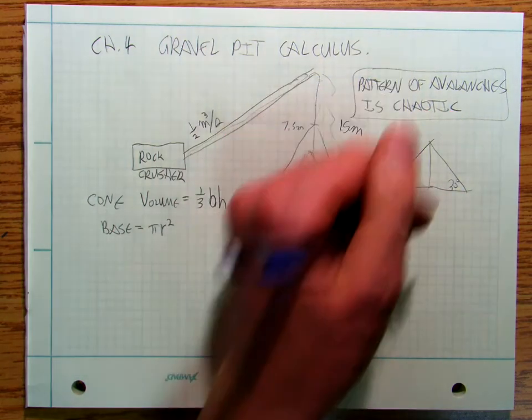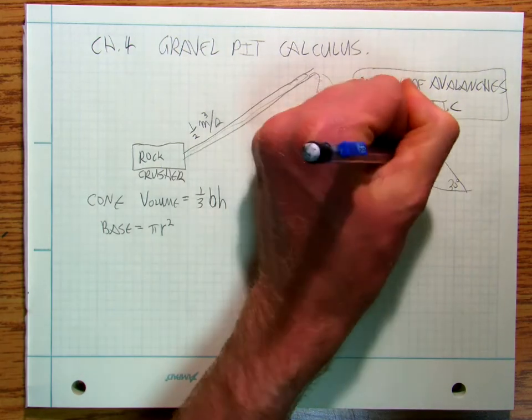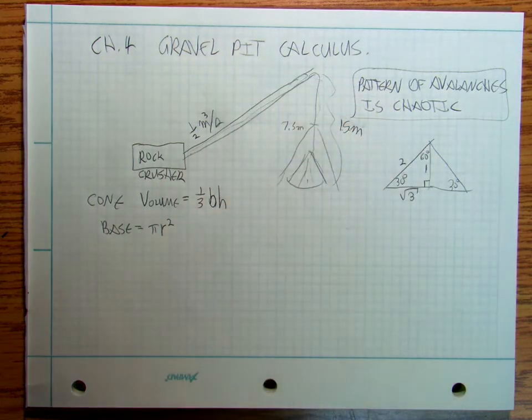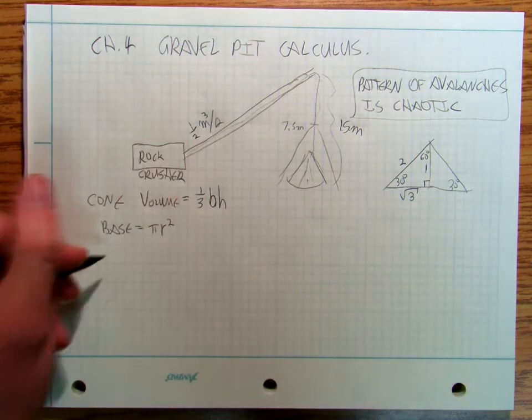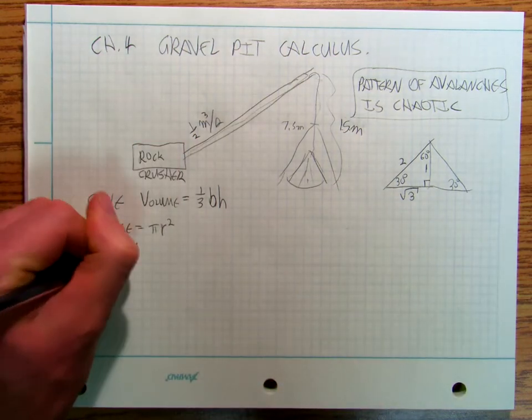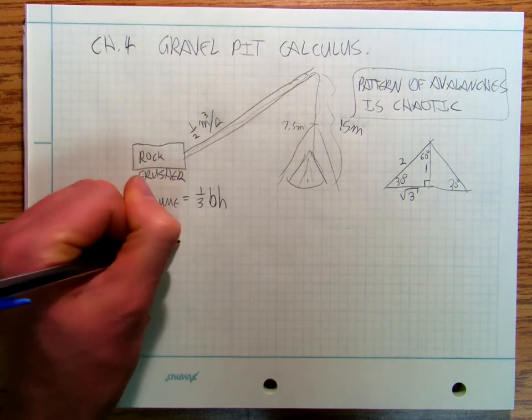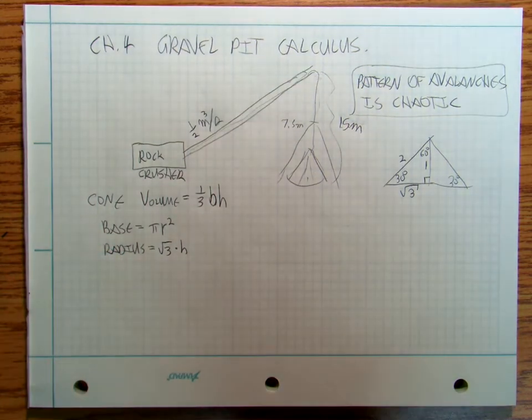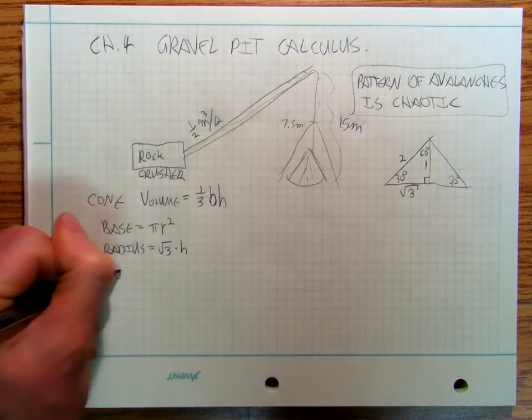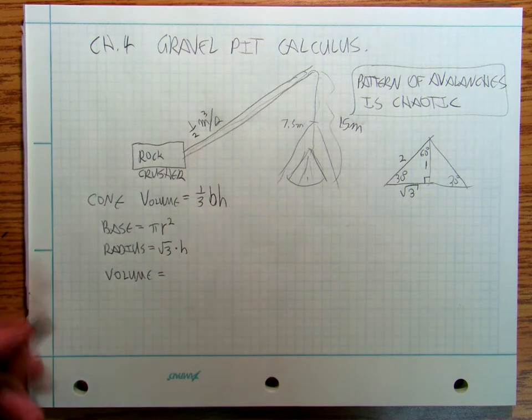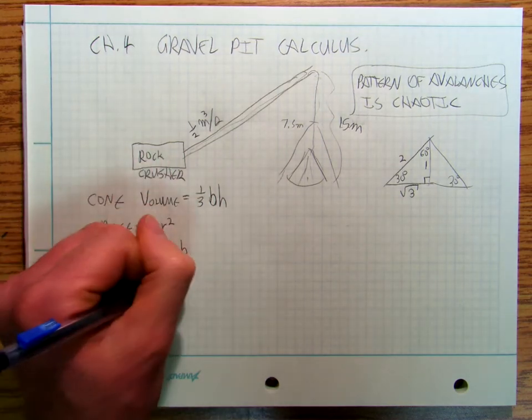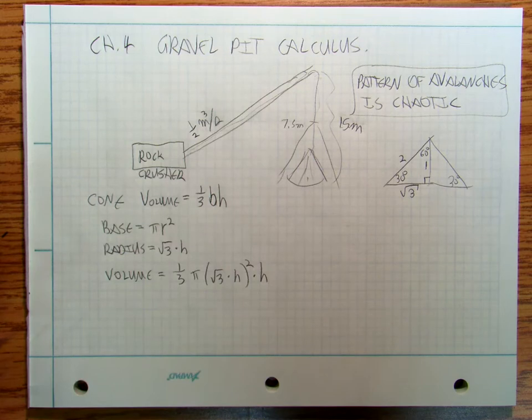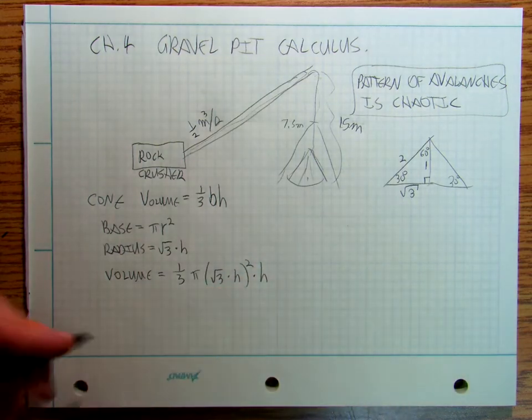And if you look, you'll see that your rock pile is probably going to have an angle of approximately 30 degrees. So if I do a little 30-60-90 triangle, if this is 1 and this is 2, this is root 3, so I can say that your radius is going to be root 3 times your height.